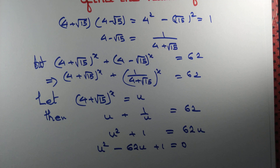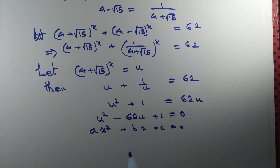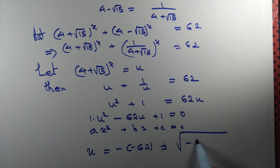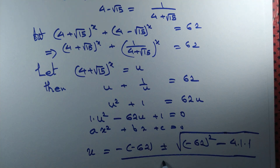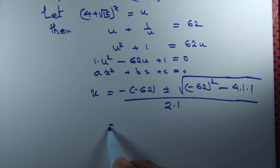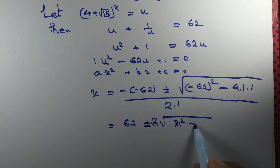This is a quadratic of the form ax² + bx + c = 0 with a = 1, b = −62, c = 1. The roots are given by u = (−b ± √(b² − 4ac)) / 2a = (62 ± √(62² − 4)) / 2. We can take 4 as a common factor: (62 ± √(4·(31² − 1))) / 2.